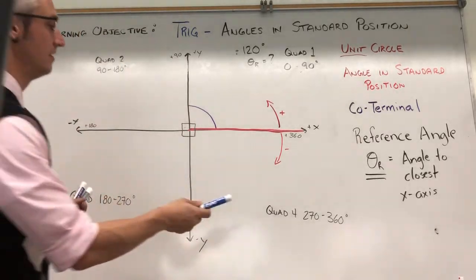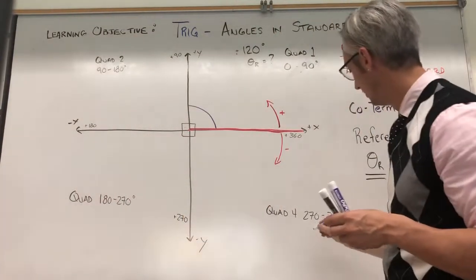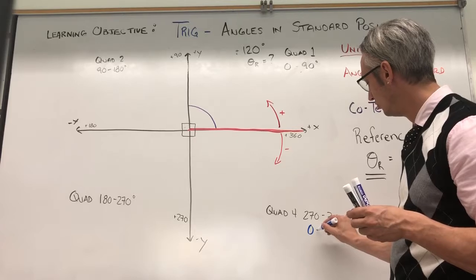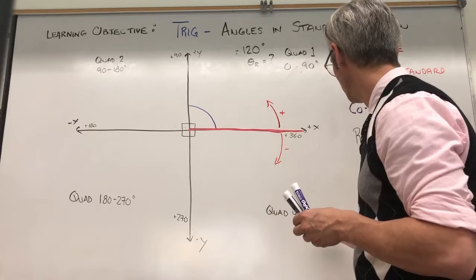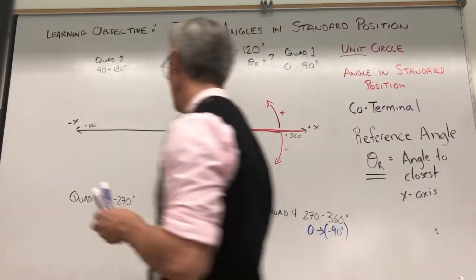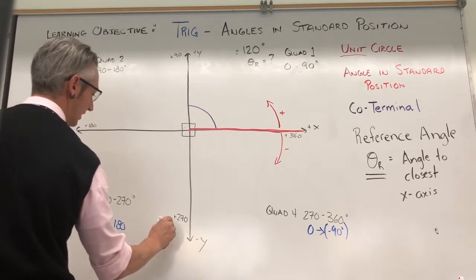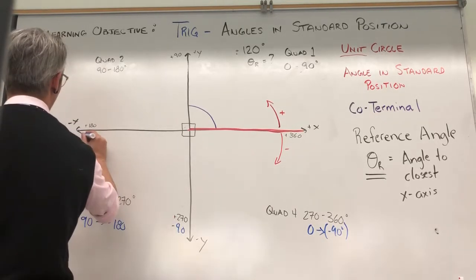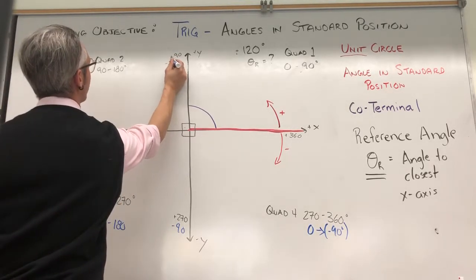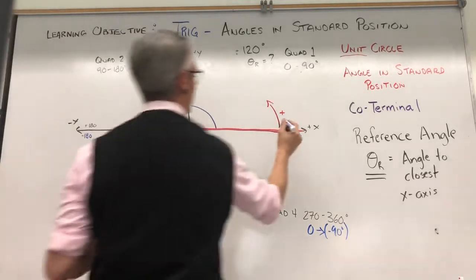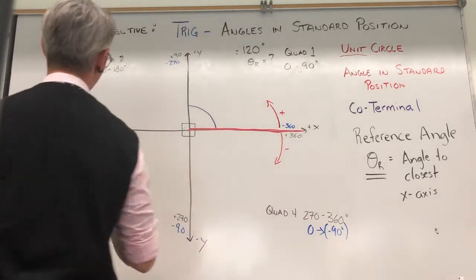But that was just dealing with our positive angles. These quadrants also have their negative counterparts. So quadrant 4 is also 0 to negative 90 degrees. Then it's negative 90 to negative 180, negative 180 to negative 270, and then negative 360. Both of these endpoints are 0 as well. So that's the quadrants.